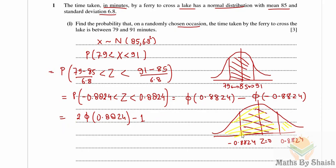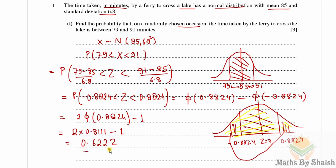If we calculate Φ(0.8824) two times and subtract one, we get the required area. From the distribution table, this is 2 × 0.8111 − 1 = 0.6222. To three significant figures, the probability is 0.622.